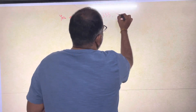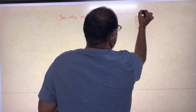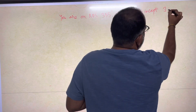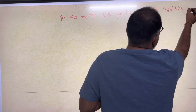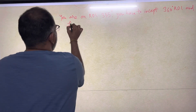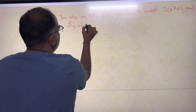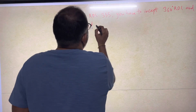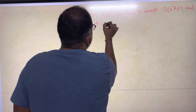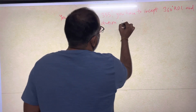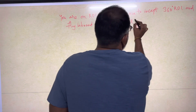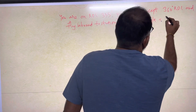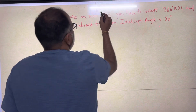For example, you are on radial 355 degrees — a random radial — and then you have to intercept the 360 radial and fly inbound to the station. Let's say the intercept angle is 30 degrees. Let us see what this question means.